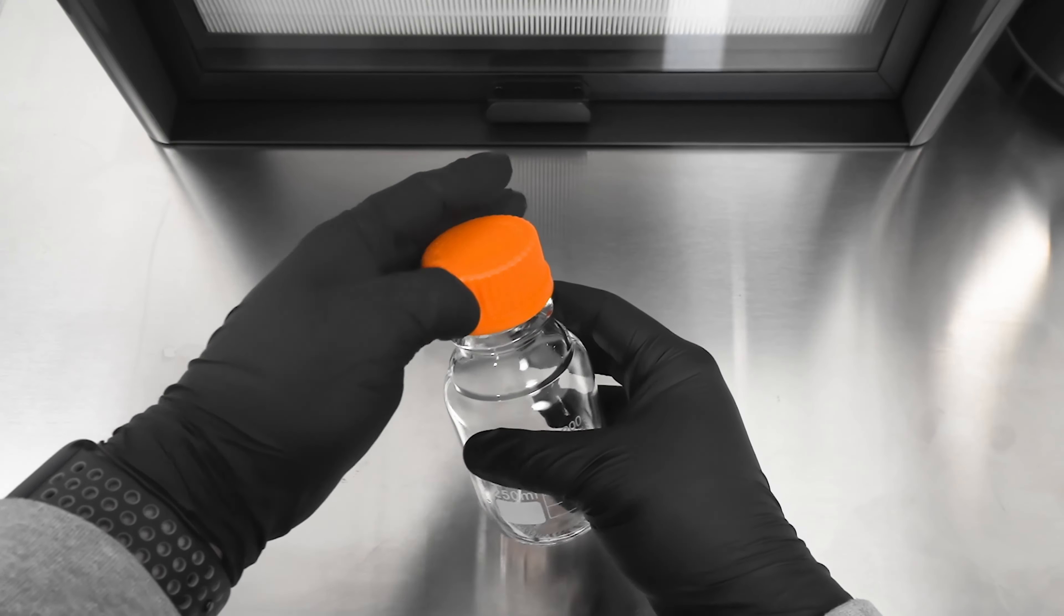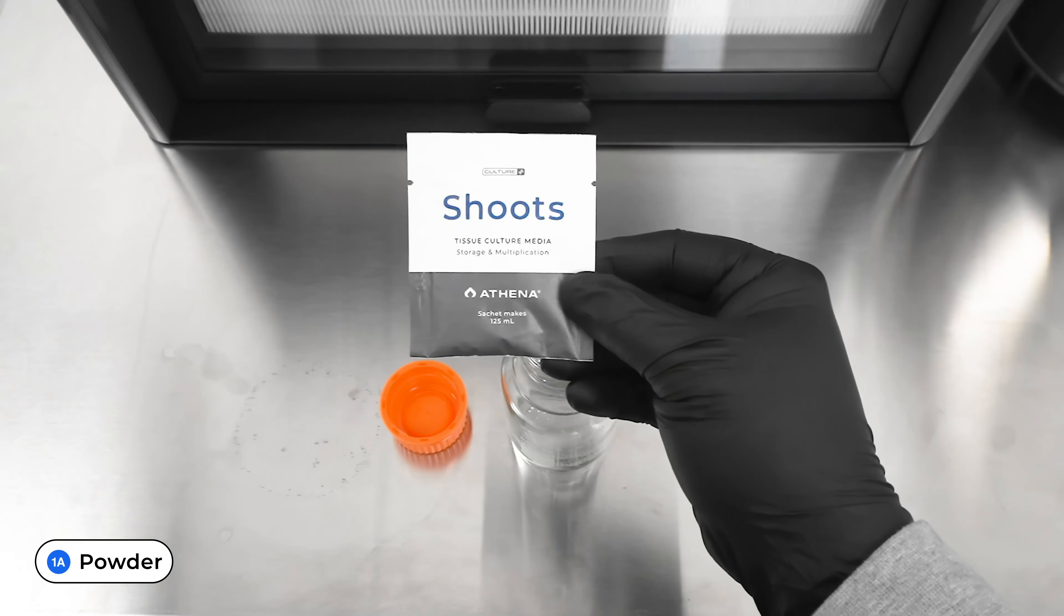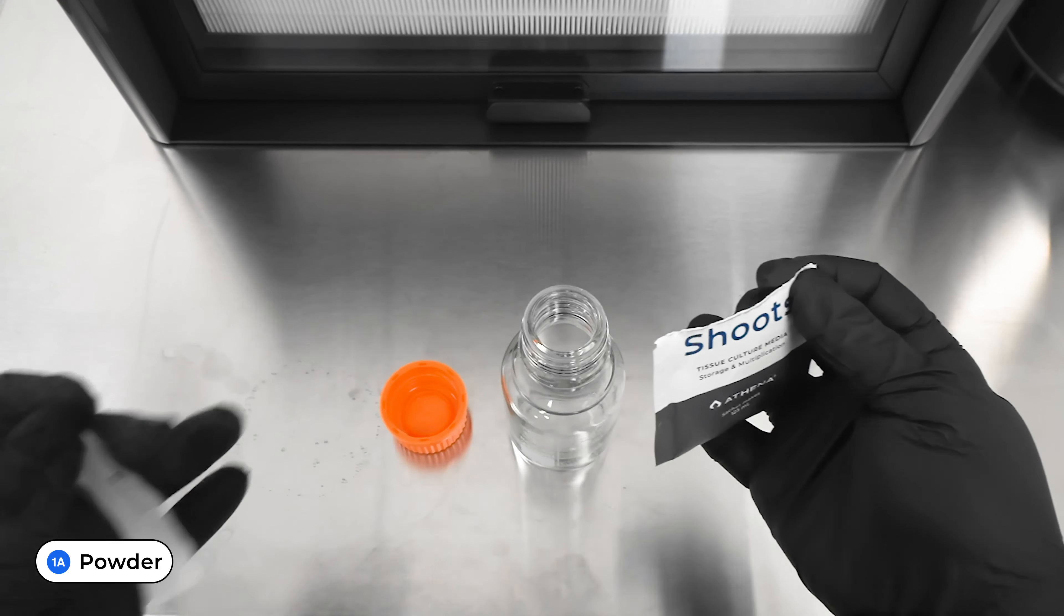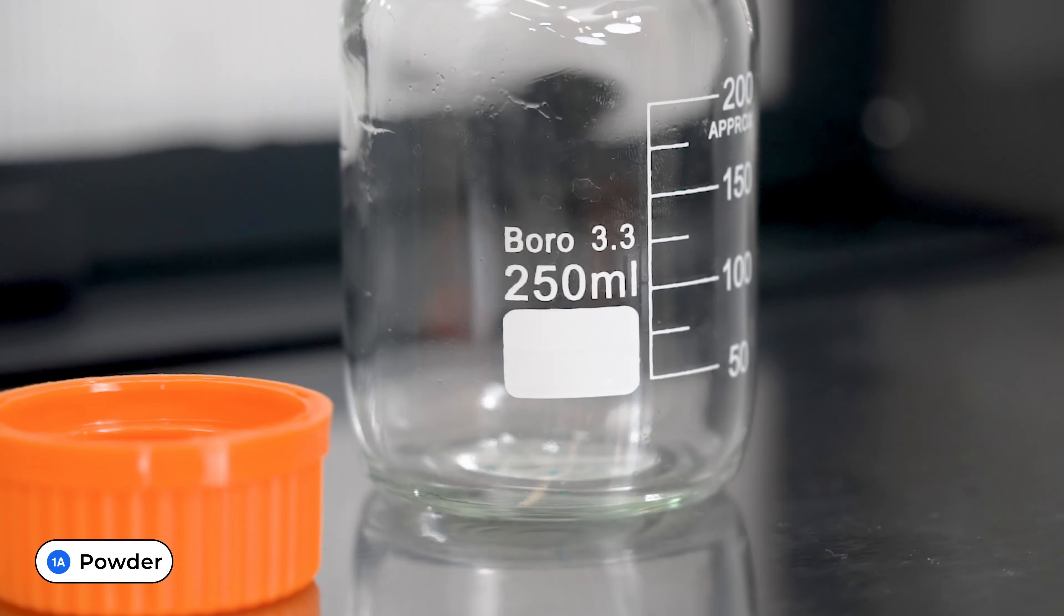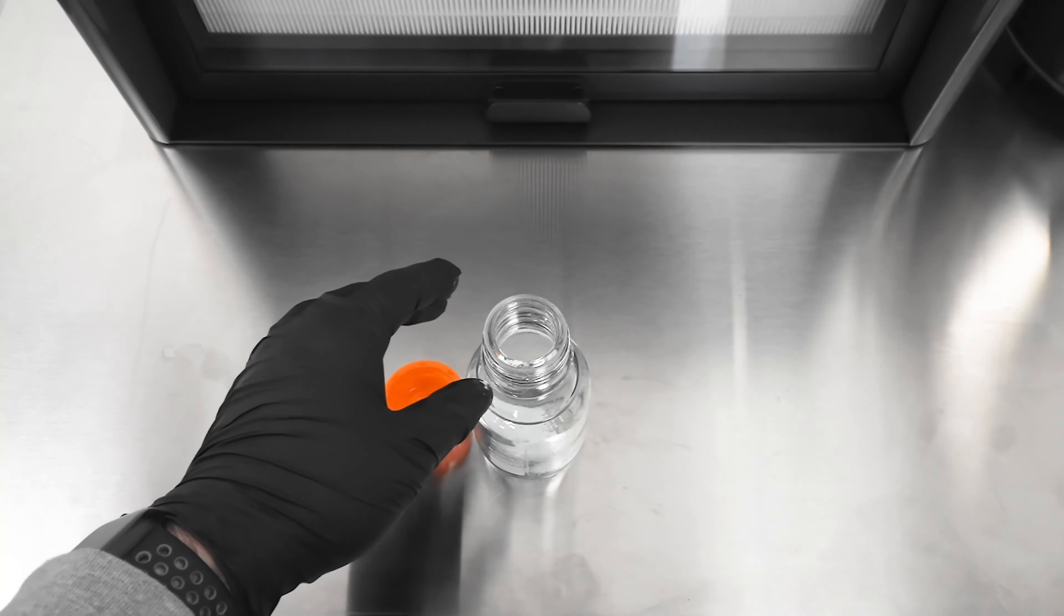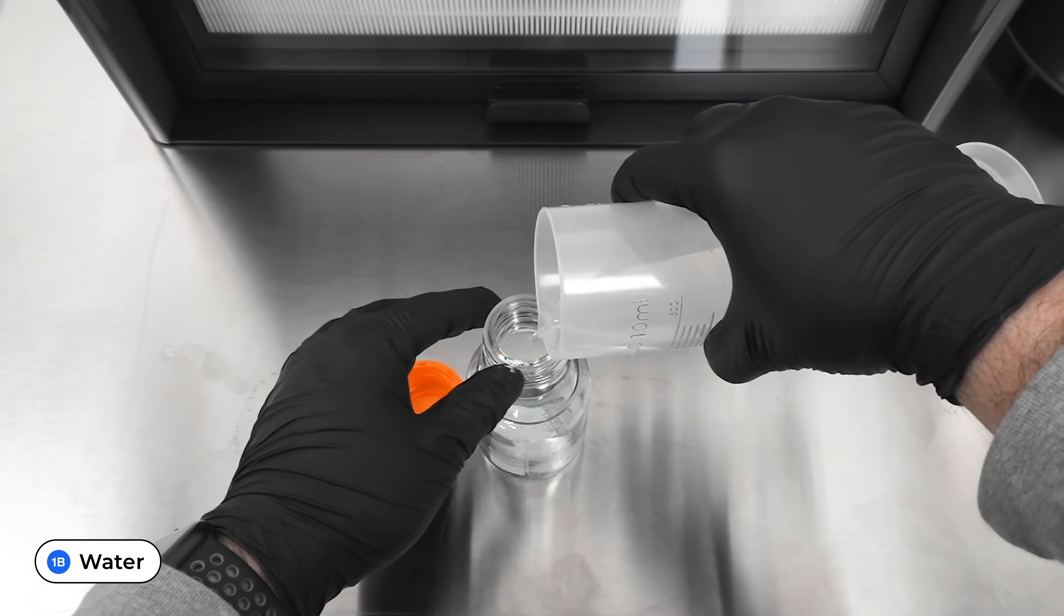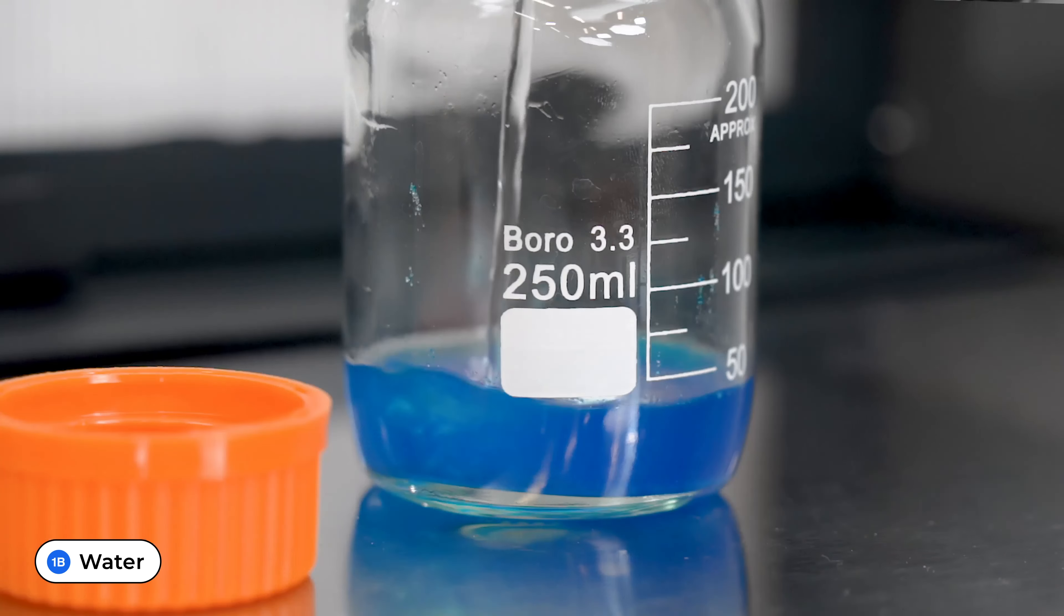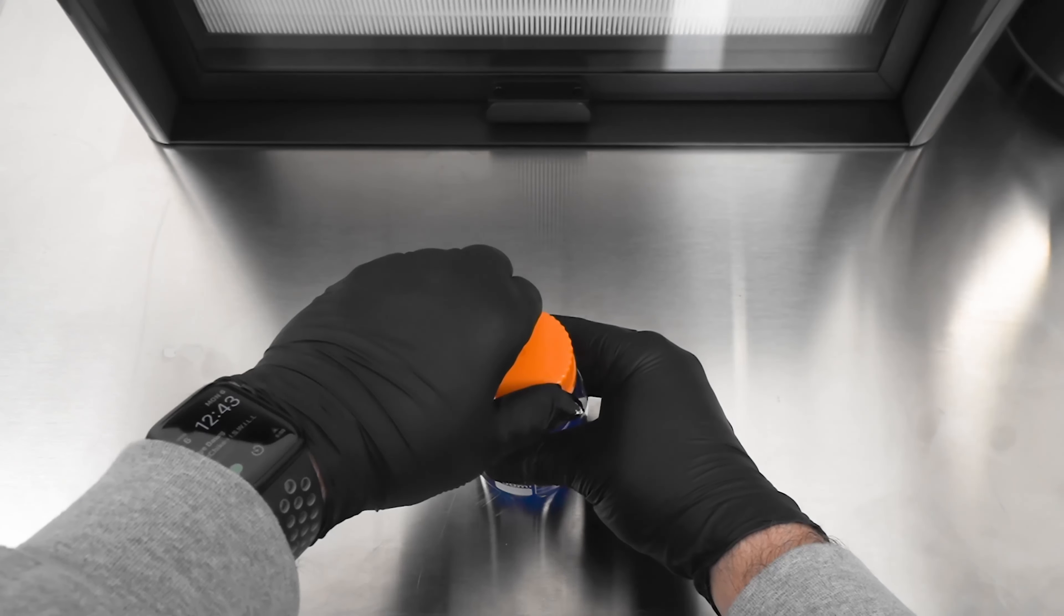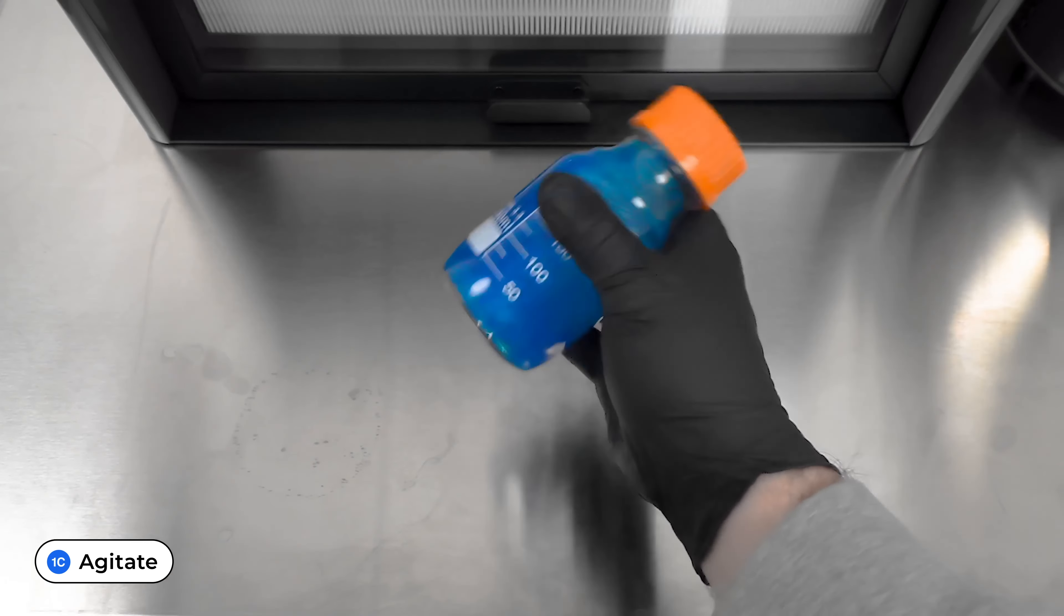Step 1, Media Prep. Pour one pack of 125 ml Shoots or Roots media powder into the 250 ml media vessel. Fill the media vessel with filtered water up to the 125 ml mark. Close the media vessel and agitate the solution until it is dissolved.